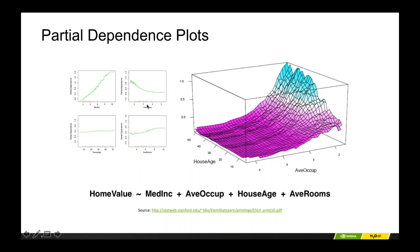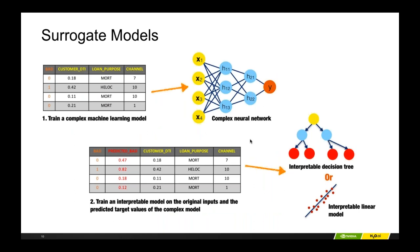Another topic that will come up a lot is surrogate models — an old data mining trick. The idea is: I have a complex machine learning model like a deep neural network trained on three inputs and real labels. To get insight into it, I train a simpler model — like a single decision tree or single linear model — on the same inputs but trained on the predictions from the complex model rather than the original labels. In this way, I use a simpler model to learn about the important variables and major trends in the more complex model.